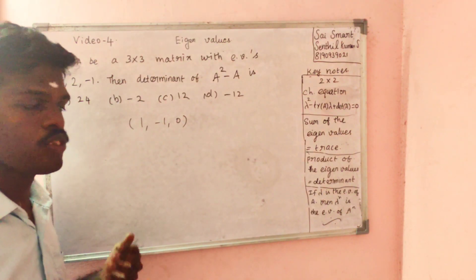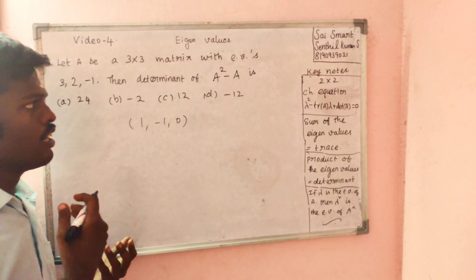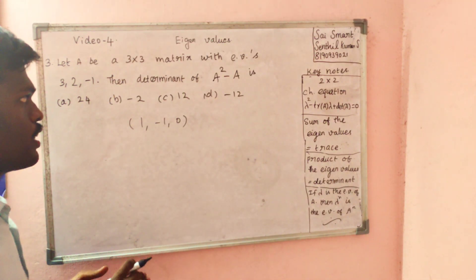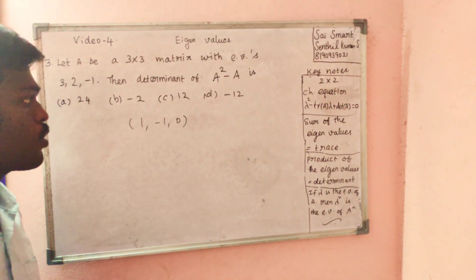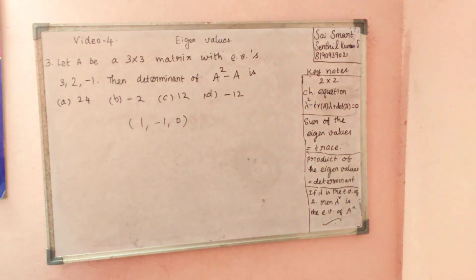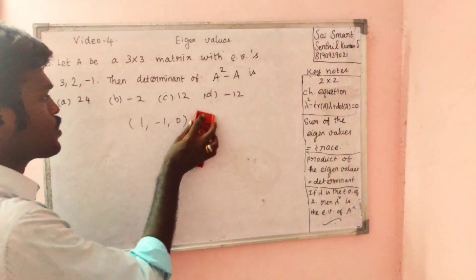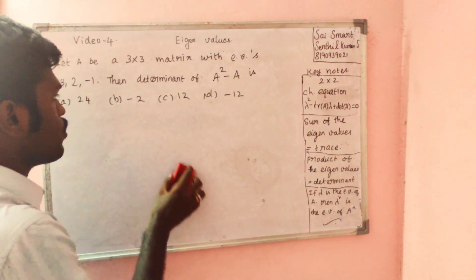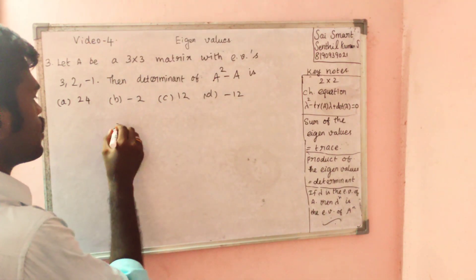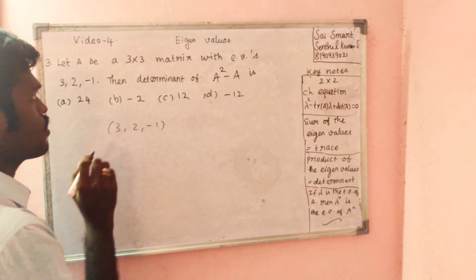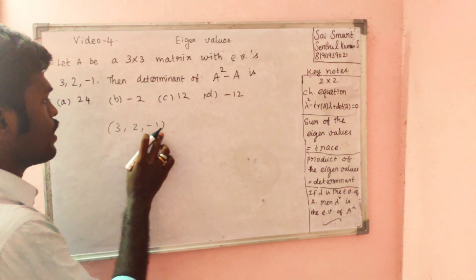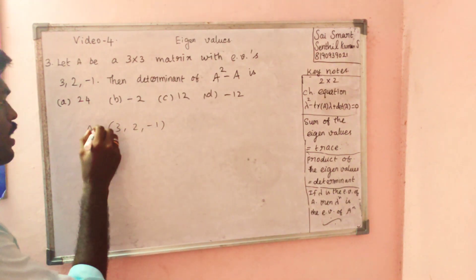If you are using eigenvalues, you can add 3, 2, 1, -1. So these are eigenvalues.